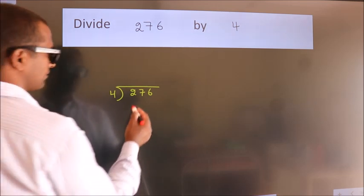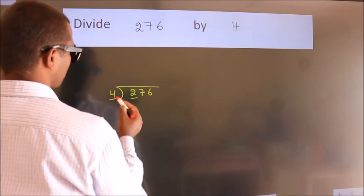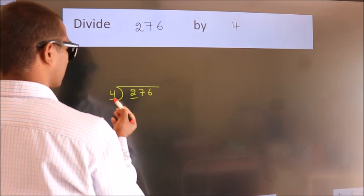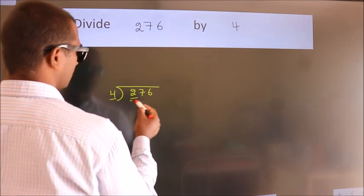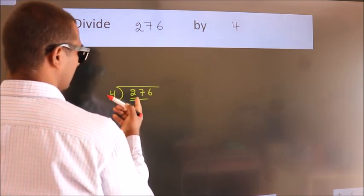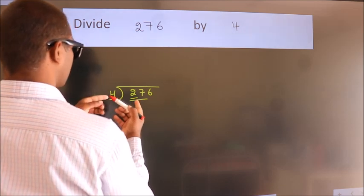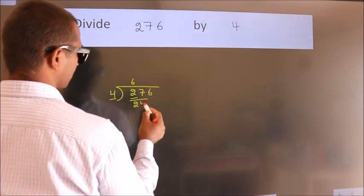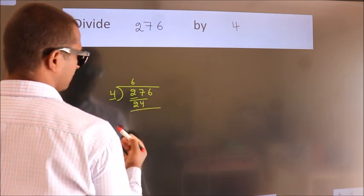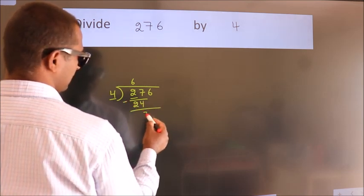Next. Here we have 2, here 4. 2 is smaller than 4, so we should take 2 numbers: 27. A number close to 27 in the 4 table is 4 times 6, which equals 24. Now we subtract and we get 3.